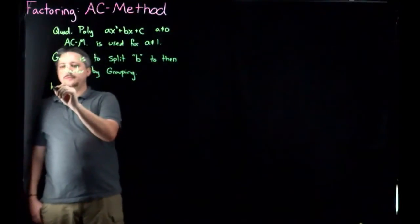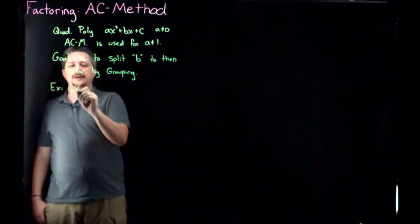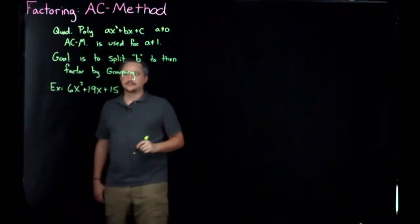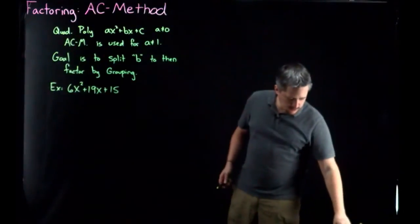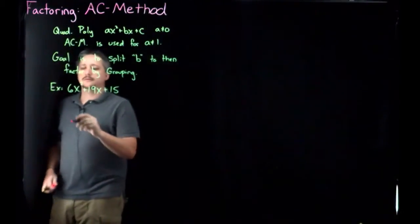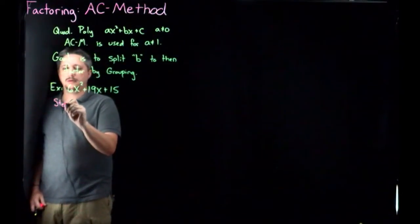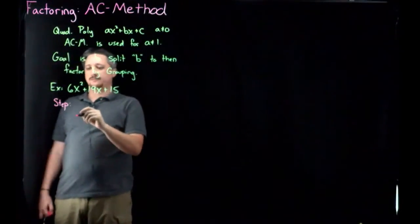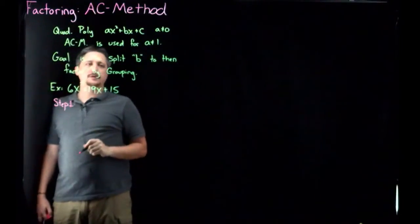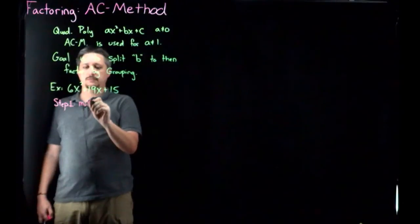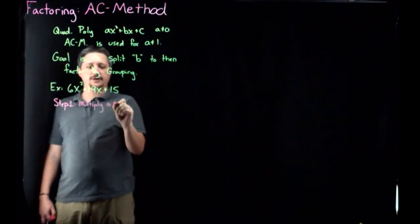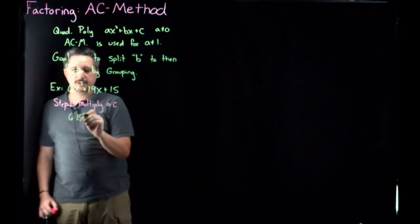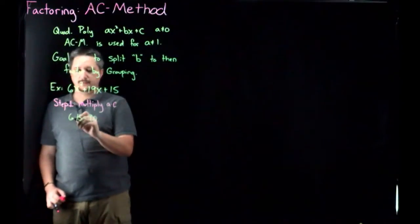For example, let's look at 6x² + 19x + 15. The reason it's called the AC method is because of the product of A and C. So step one is to multiply A times C. In this case, I'm going to get 6 times 15, which equals 90.